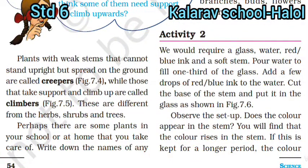Plants with weak stems that cannot stand upright but spread on the ground are called creepers, while those that take support and climb up are called climbers. These are different from herbs, shrubs, and trees. Now, activity 2.